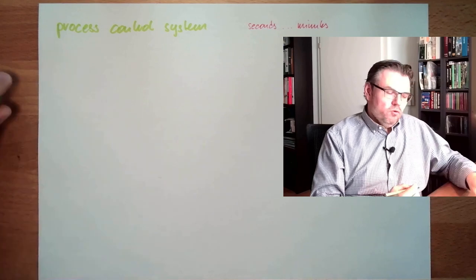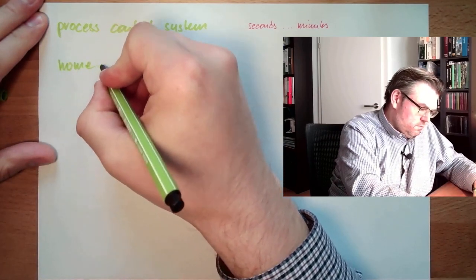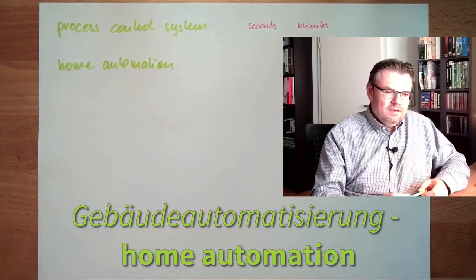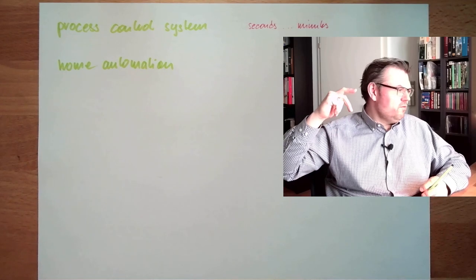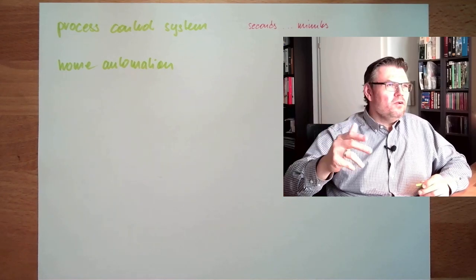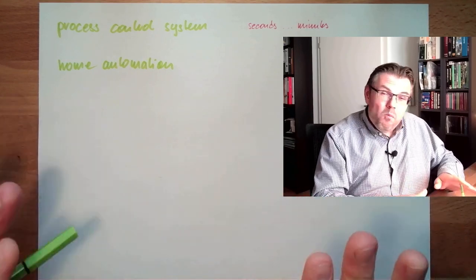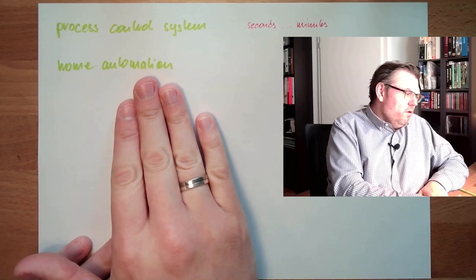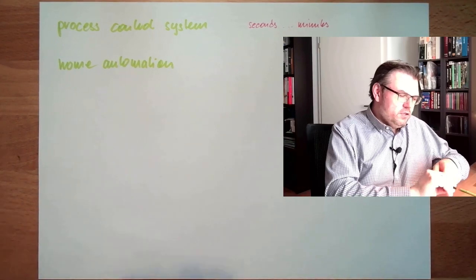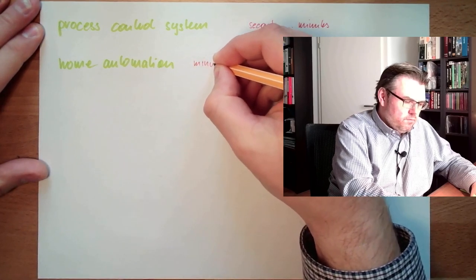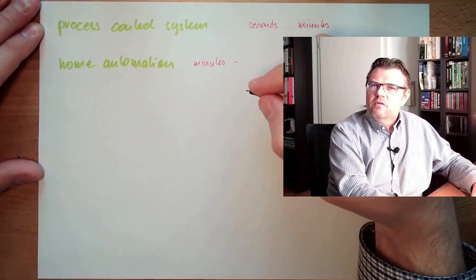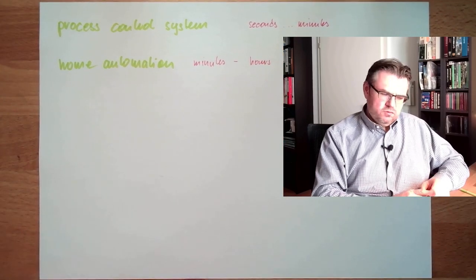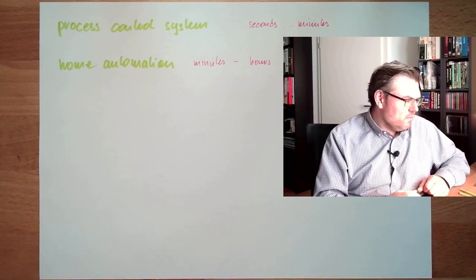Another big field is home automation, or building automation. There we want to control temperature, control humidity, control lighting intensity, control the shades. Home and building automation is also a big part. For lightning and similar systems, reaction times are on the order of minutes, and for temperature control it might even be okay if it takes one hour — so minutes to hours would be the expected time constant there.